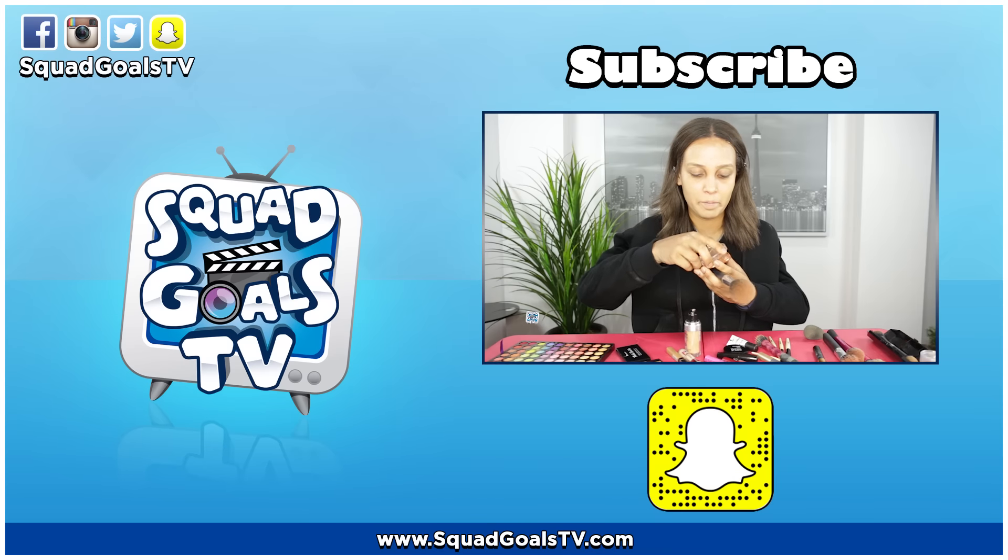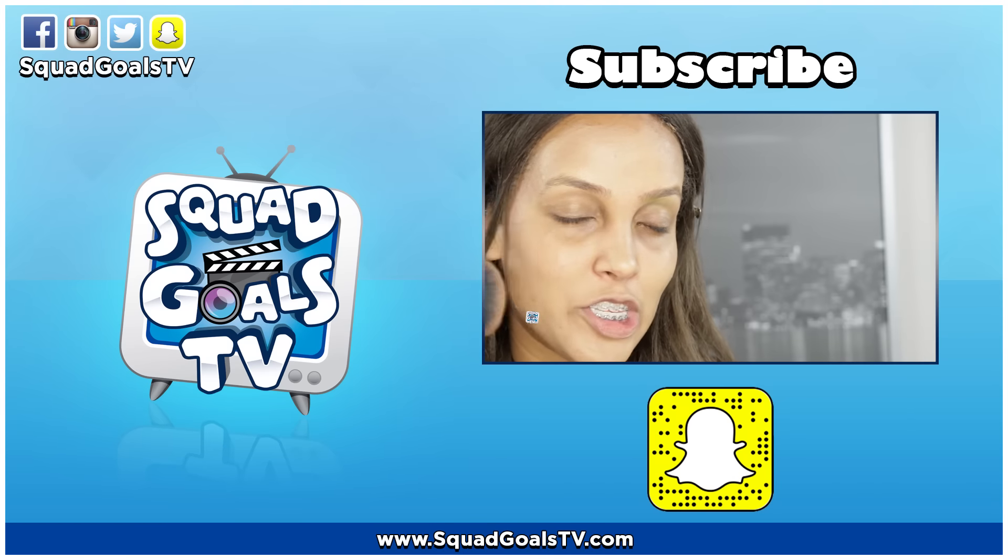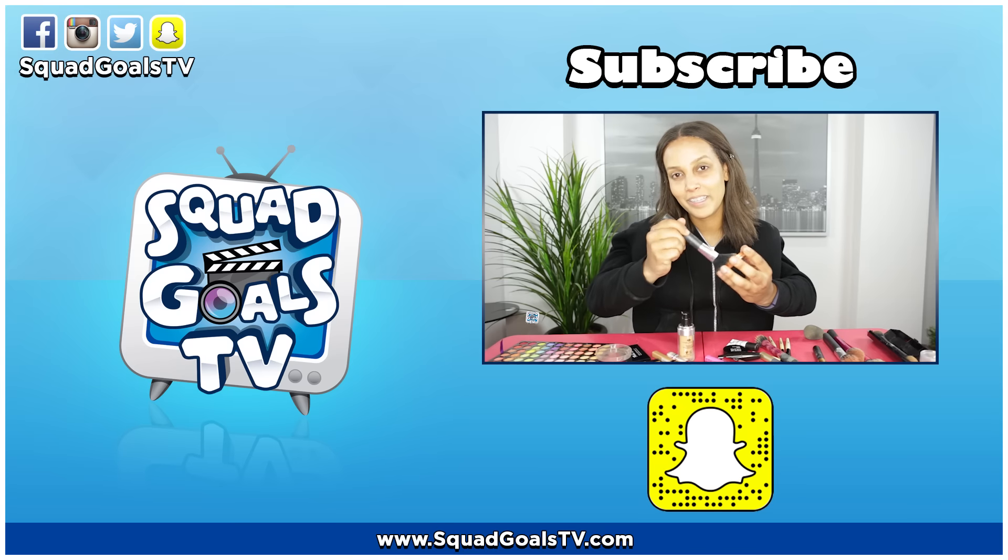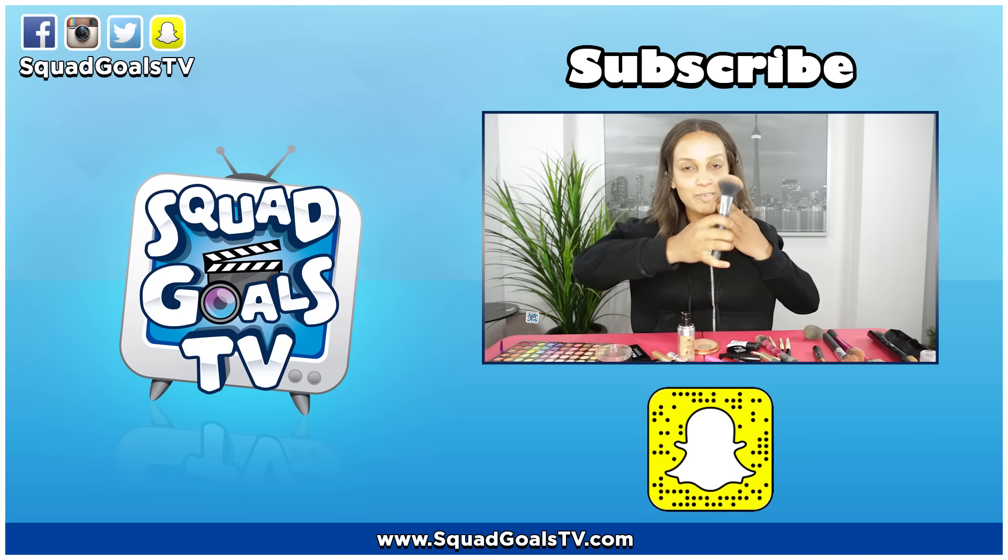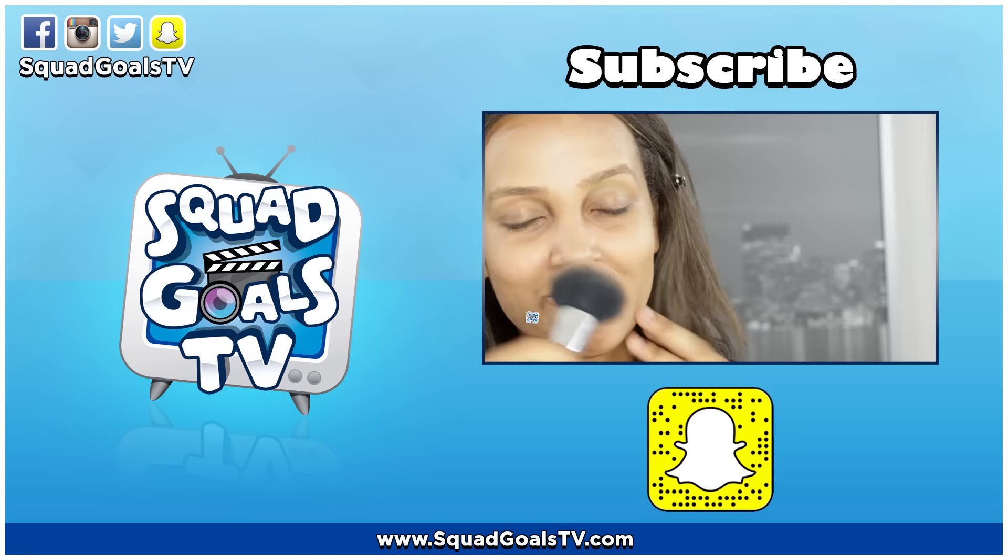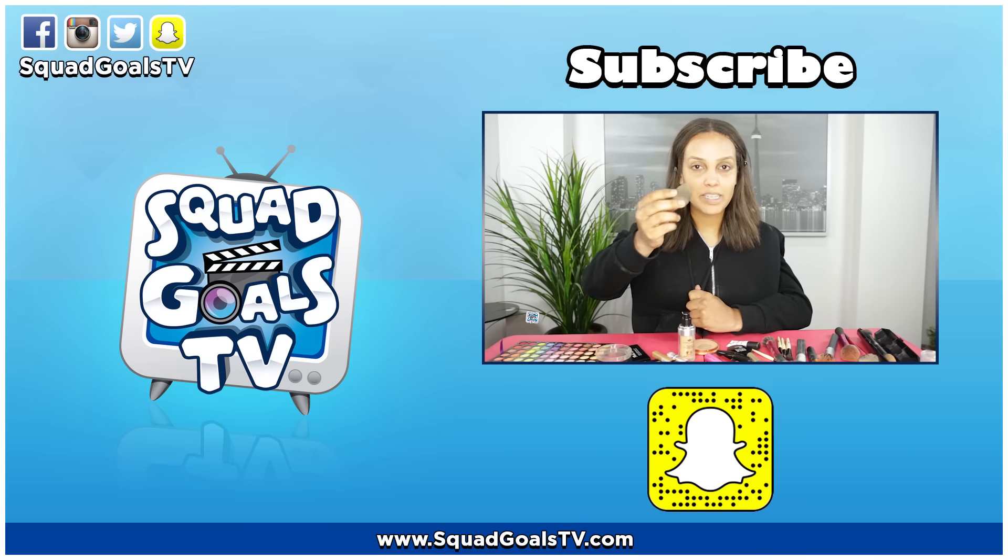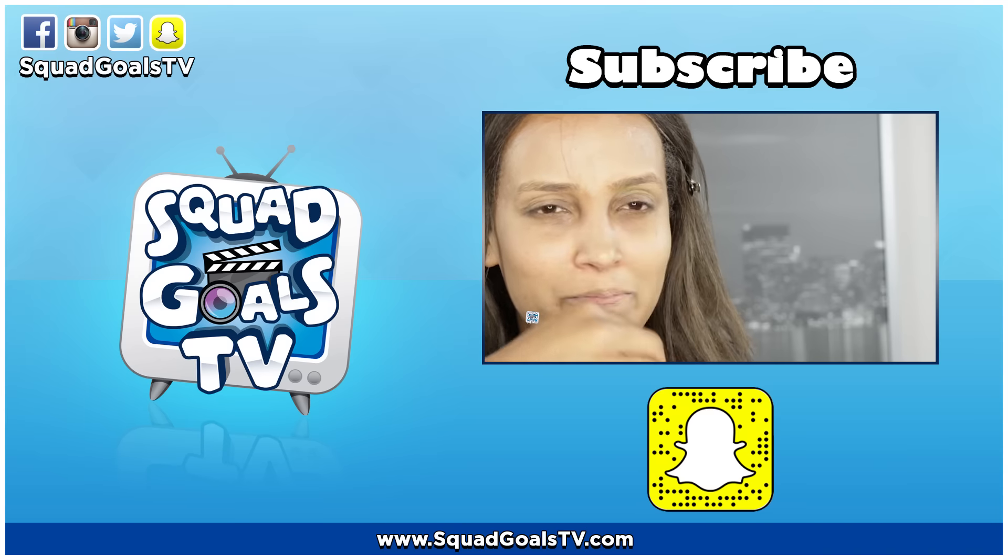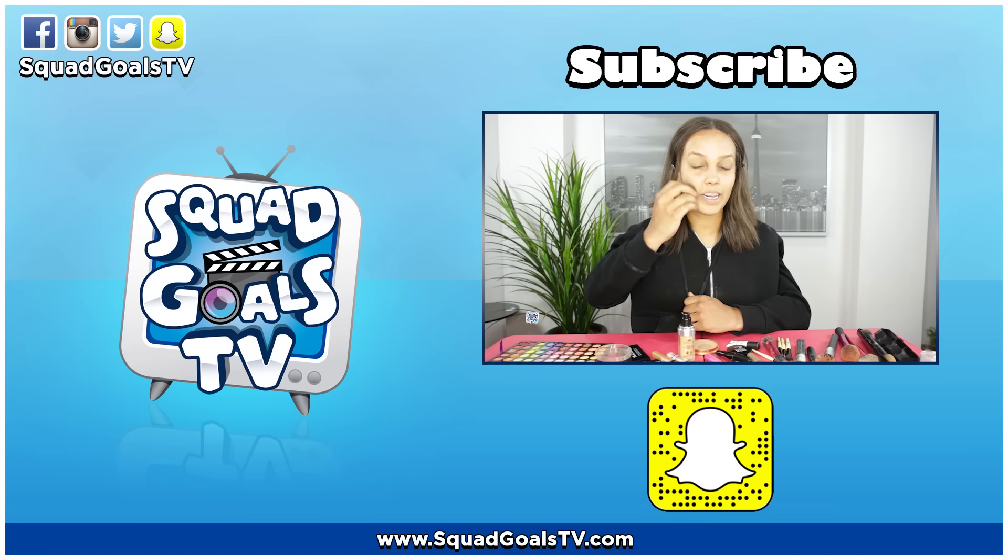My bronzer. So I'm going to just take a little bit of bronzer and pat it into my cheek and my lower cheek. Now I'm going to take my beauty blender and I'm just going to blend in what I've already put on my face. I'm just blending it together.